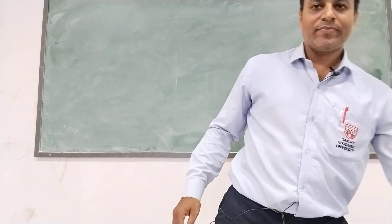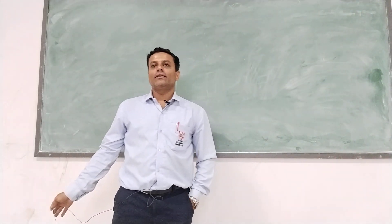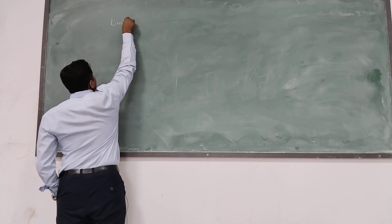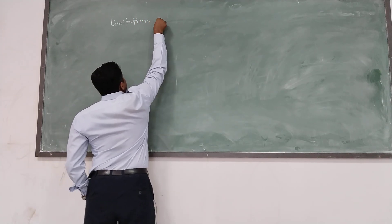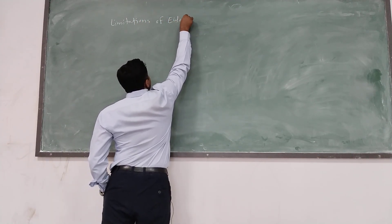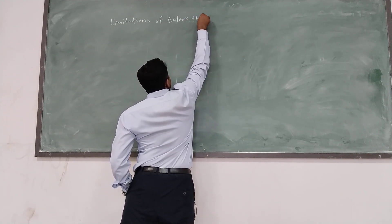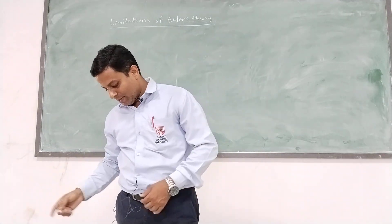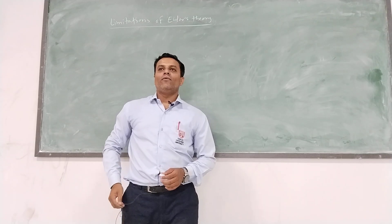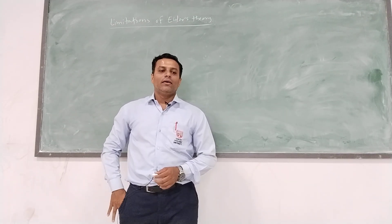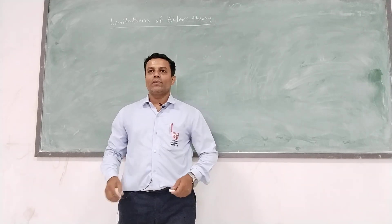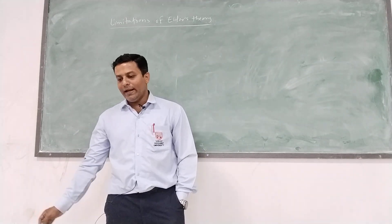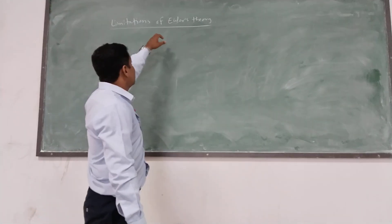We will start today's lecture. Today we are going to see the limitations of Euler's theory. In Euler's theory, the formula is derived by making the assumption that each column is going to fail by buckling only — it should bend and fail. Because of the bending, the column should fail; that is what we have considered in Euler's theory.